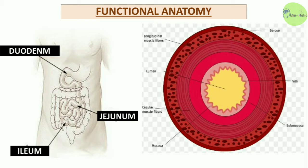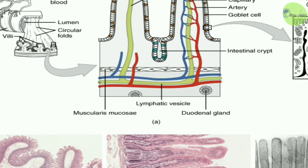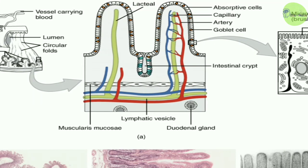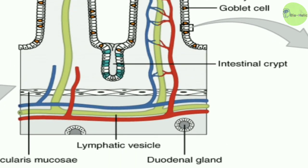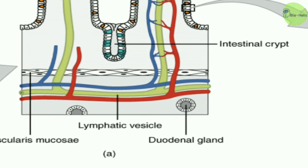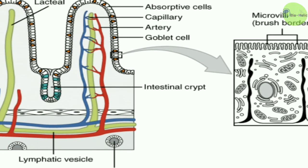There are numerous folds of the intestinal mucosa called plicae circulares. There is presence of densely packed villi and microvilli in the small intestine, and these villi have numerous depressions called the crypts of Lieberkühn. In this diagram we can clearly see many parts of the small intestinal lumen: absorptive cells, capillaries, arteries, goblet cells, intestinal crypts, duodenal glands, lymphatic vessels, muscularis mucosa, and microvilli containing brush borders.